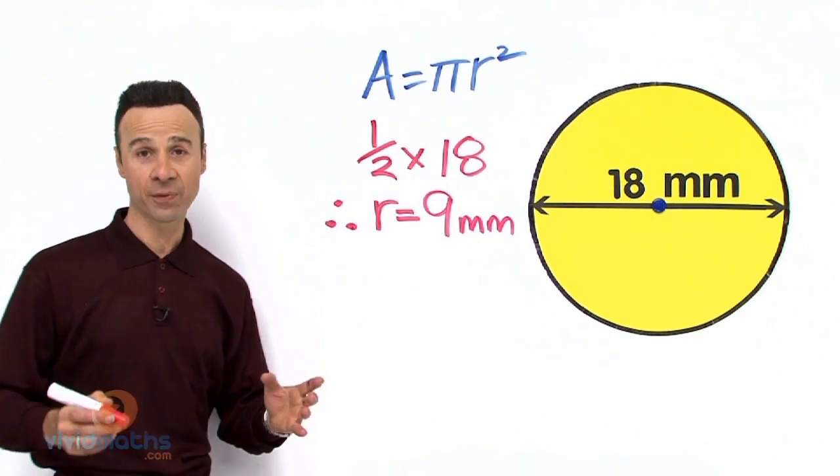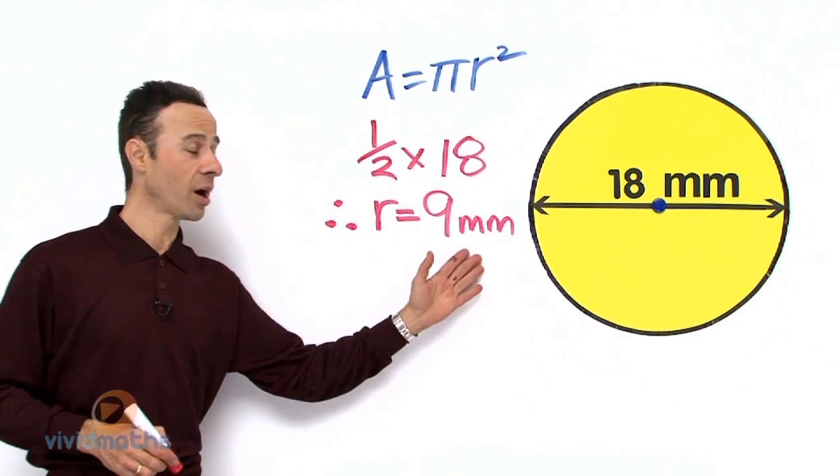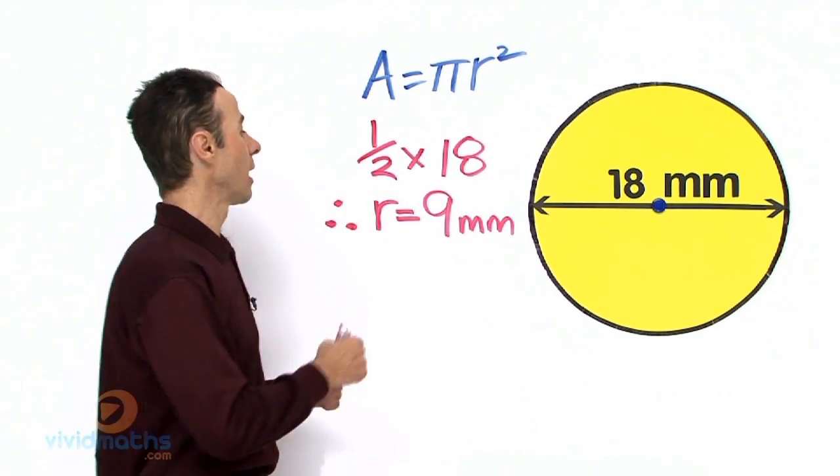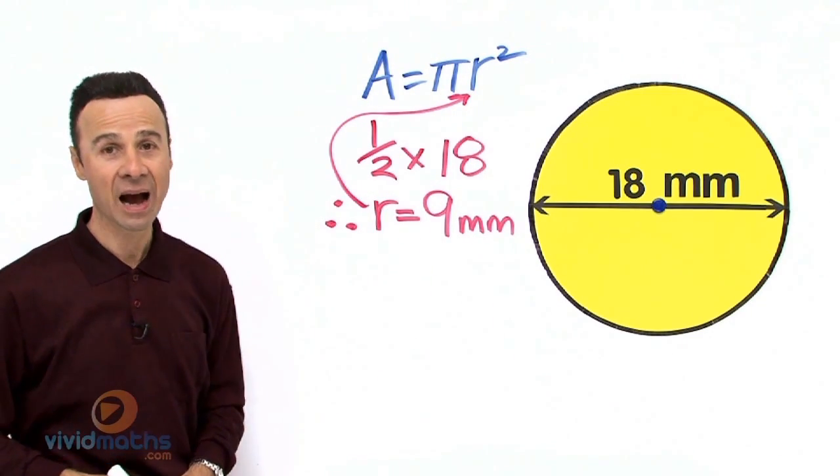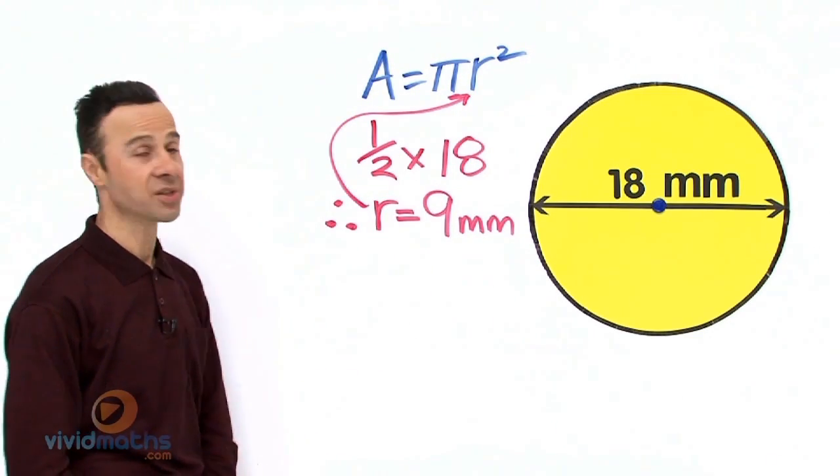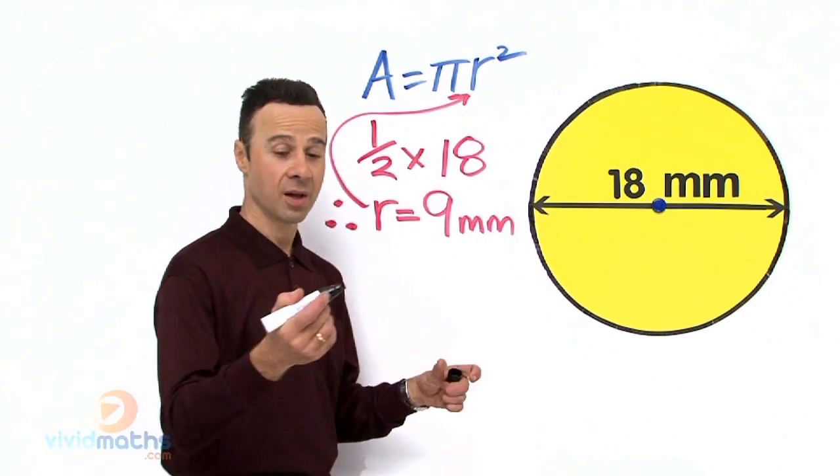So our radius, half of 18mm, is 9mm. Now we can take that value and plunk it into the formula where it needs to be, R squared. So let's work out the area for this circle.